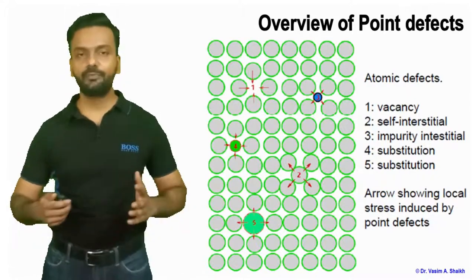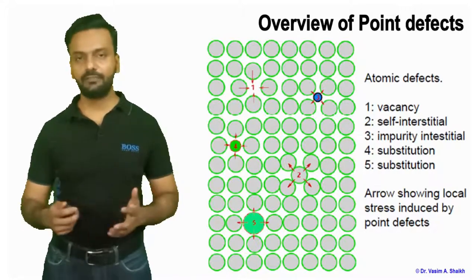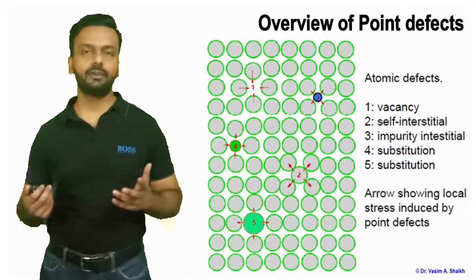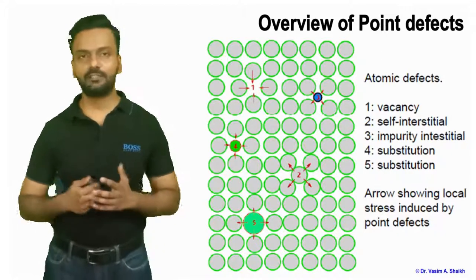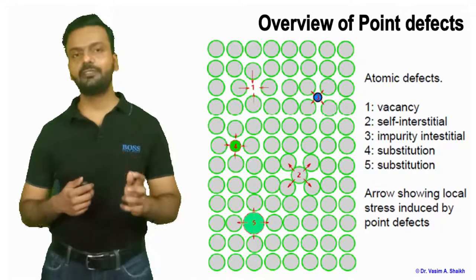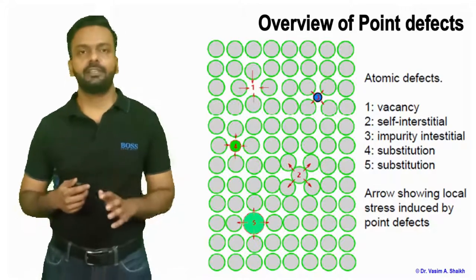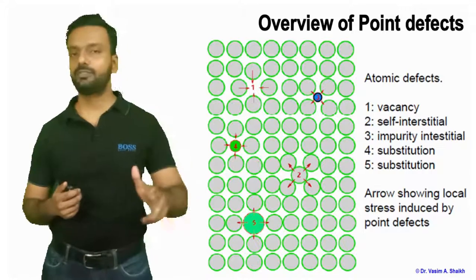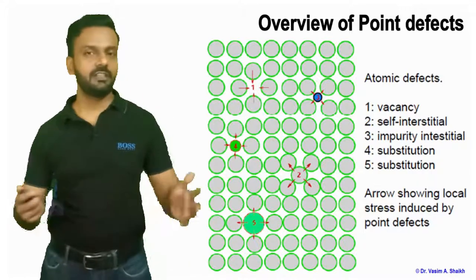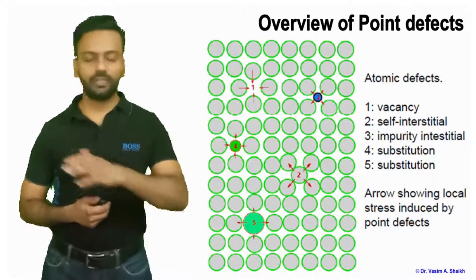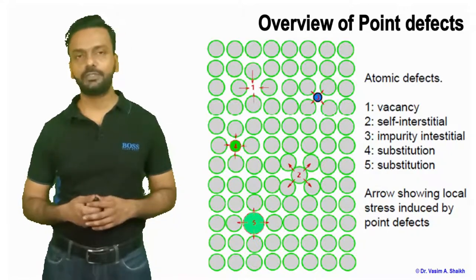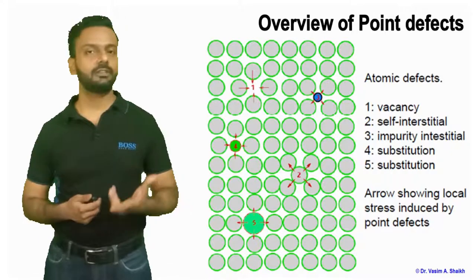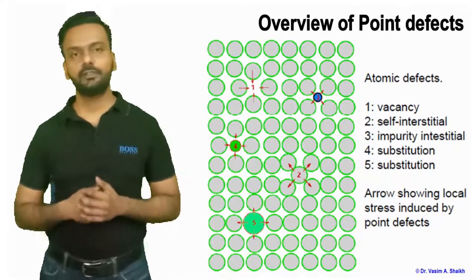In an overview of all point defects: first, the vacancy — a vacant site creating local stresses; second, self-interstitial — the same host atom going into a gap or interstitial site; third, impurity interstitial — adding something from outside, like carbon in iron; and fourth, substitution — where the substituting atom's size can vary but should not differ by more than 15% in atomic radii, otherwise complete solid solution will not form.